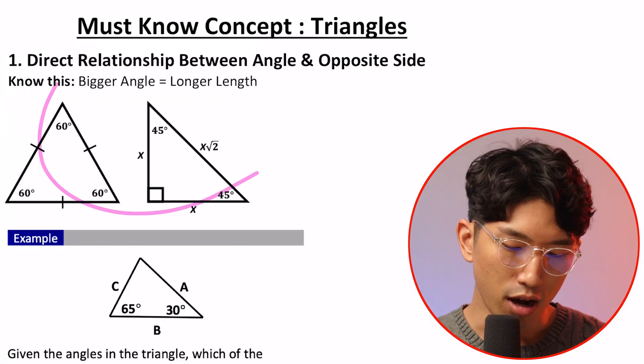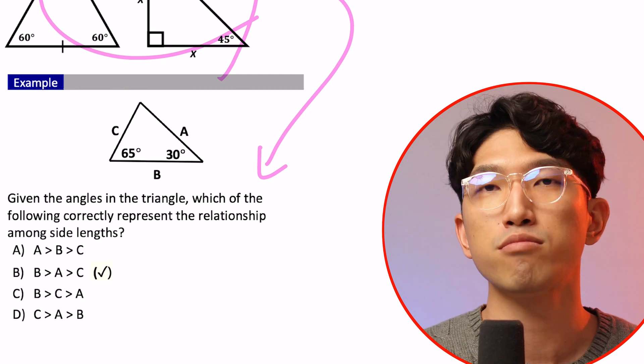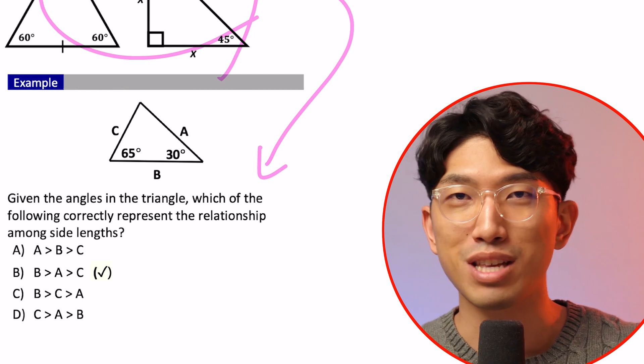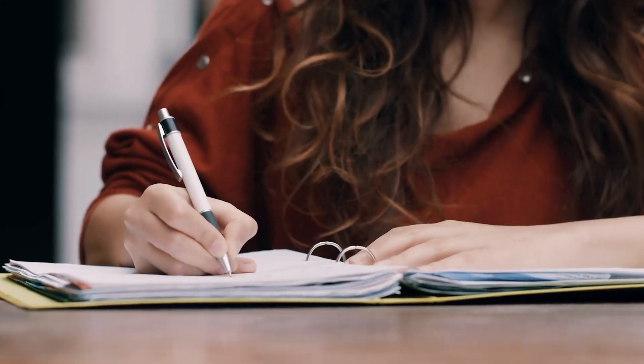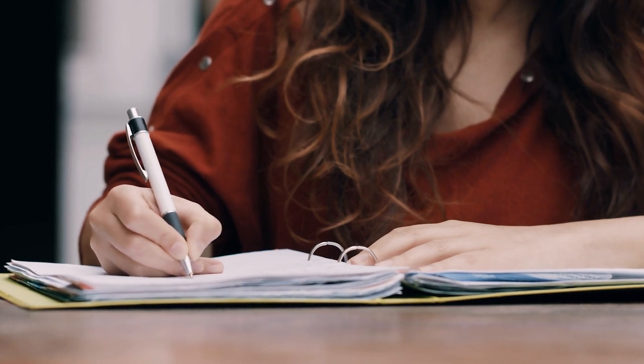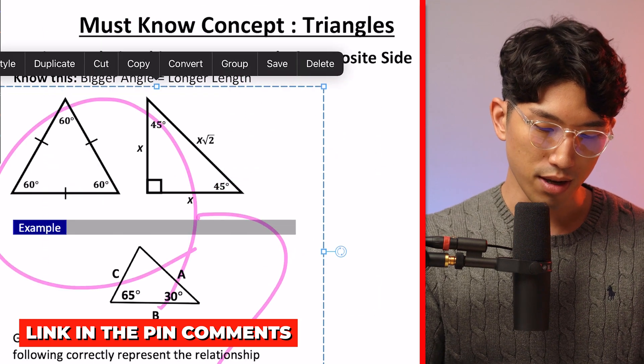We're going to start off with the concept, apply it to an easy simple question, then work our way up to level 5 difficulty questions, and I'll share some insights along the way. Everything we'll cover is organized in this PDF right here, which I highly recommend you download, print out, and try the questions with me — because that's how you get better on the SAT, by trying out these questions yourself rather than just watching someone solve them on YouTube. I'll link it in the pinned comment below.